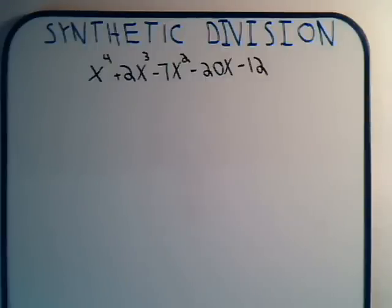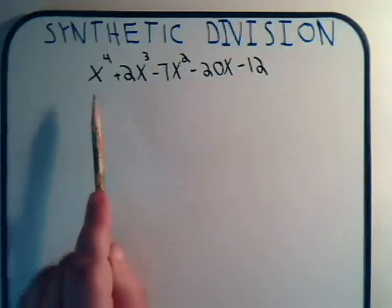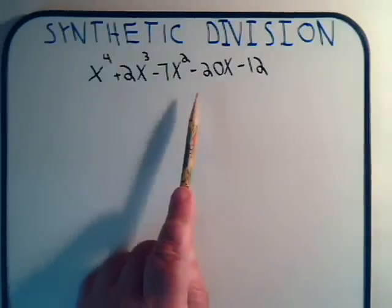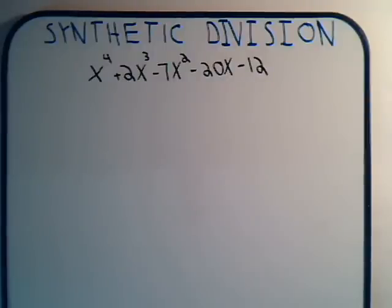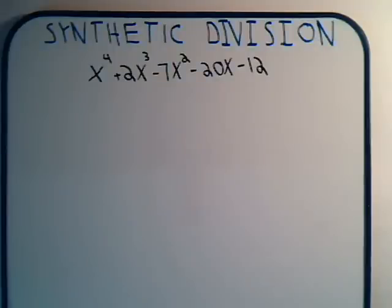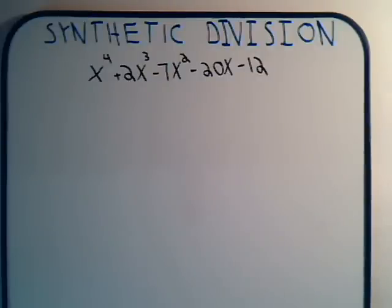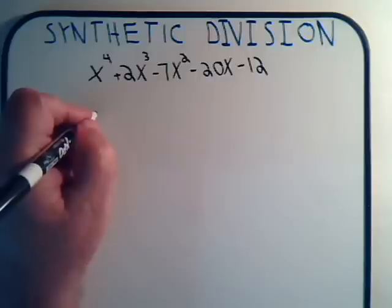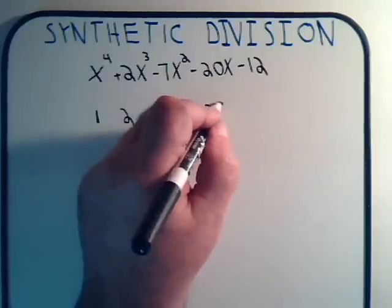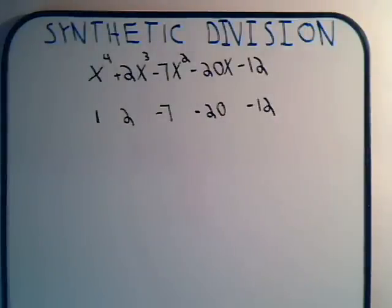In this video we want to see if we can determine the prime factors of this polynomial: x to the 4th plus 2x cubed minus 7x squared minus 20x minus 12. Notice that we have powers of x beginning with 4 down to x to the 0, decreasing incrementally by 1. So we don't have to rewrite it — all we have to do to get started is write down our coefficients: 1, 2, -7, -20, -12.